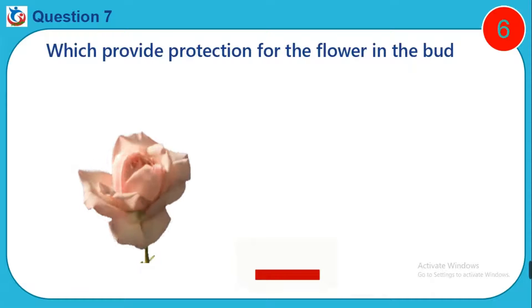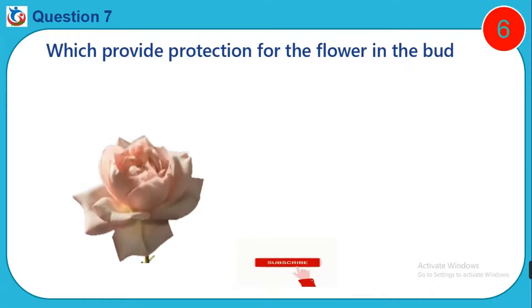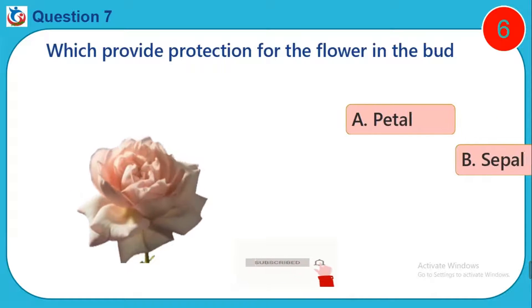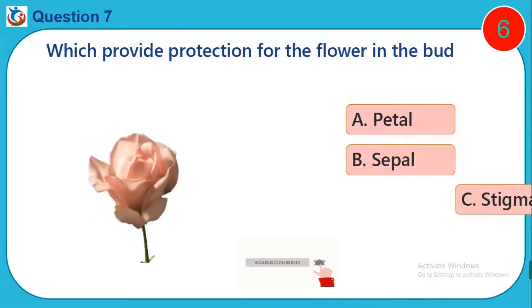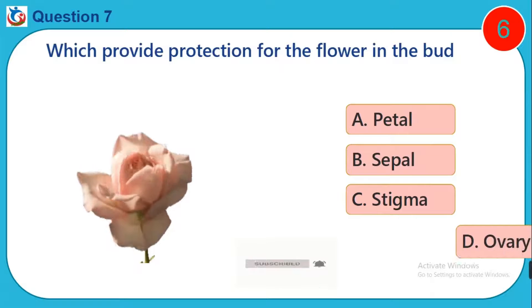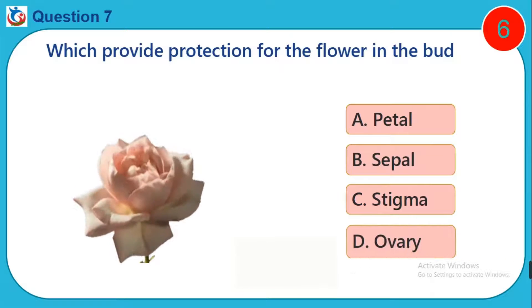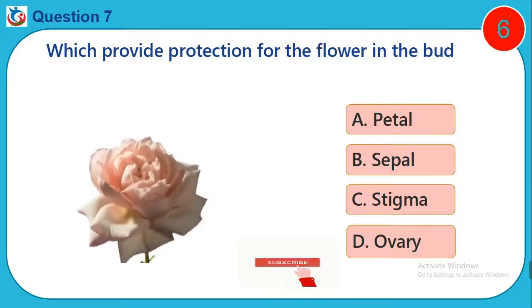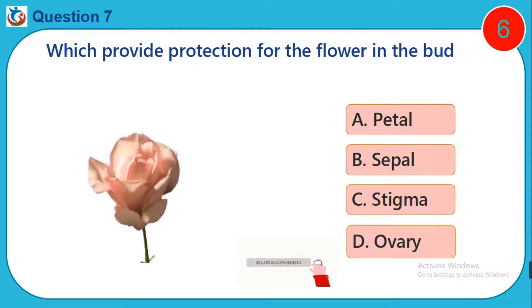Question 7. Which provide protection for the flower in the bud? A. Petal. B. Sepal. C. Stigma. D. Ovary.